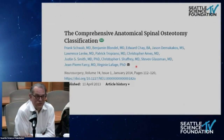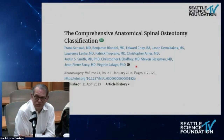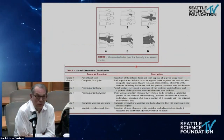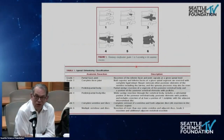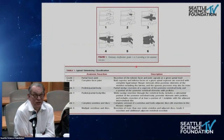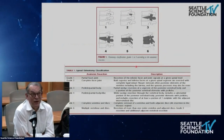The continuing bugaboos of adult deformity surgery are junctional failures and non-unions with rod fractures. In the last five years especially, surgeons have been working to address and reduce those risks. Quad rods have been an important part of that development, particularly in reducing the incidence of non-union and rod fracture.